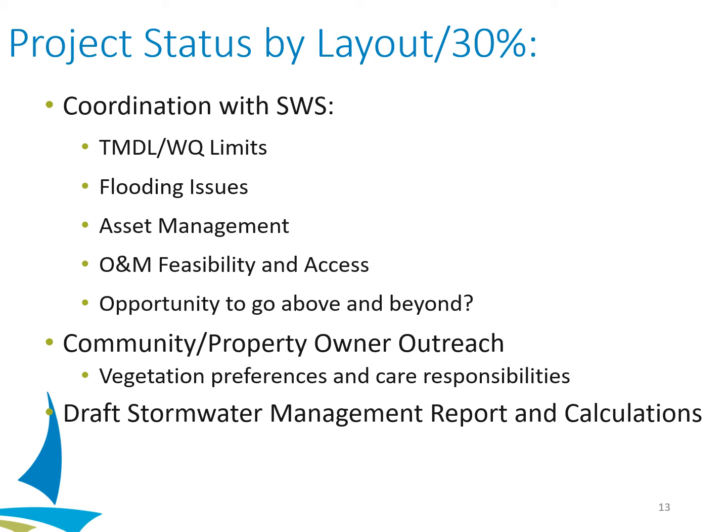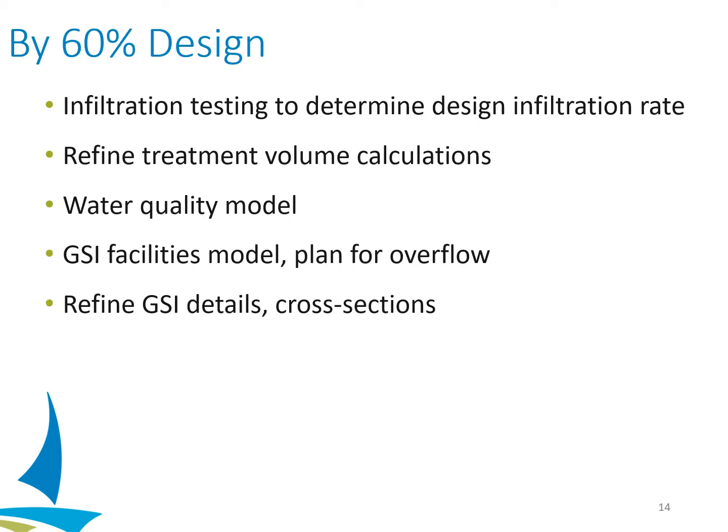We also want to start doing community outreach to understand if there are any preferences or issues with providing care, especially on places like a boulevard where it will be adjacent property owners in their space and potentially part of their care responsibilities. By layout or 30%, we should start seeing a draft stormwater management report and the calculations I've mentioned. By 60%, we should be taking a finer point to the work done by 30% — we should have infiltration testing results so that we can have a design infiltration rate, start refining those calculations, have a water quality model set up to demonstrate removal efficiency, and have an understanding of how the GSI facilities work in larger storm events.